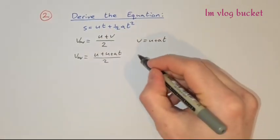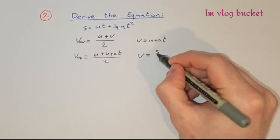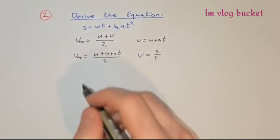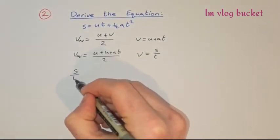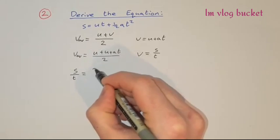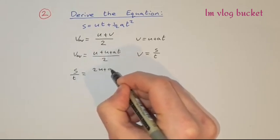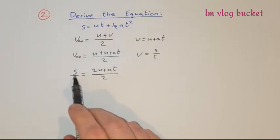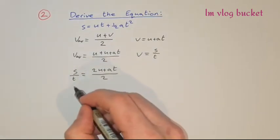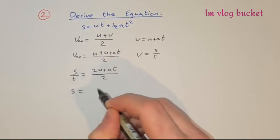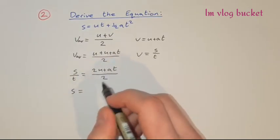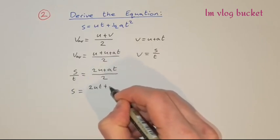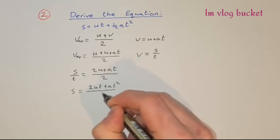We can also say that velocity is equal to displacement over time, so s/t. We substitute that in on the left side: s/t = (2u + at) / 2. To get s on its own, we multiply across by t, so s = t × (2u + at), which gives us (2ut + at²) / 2.